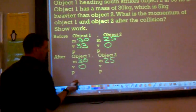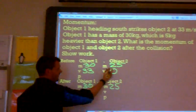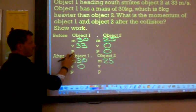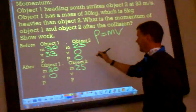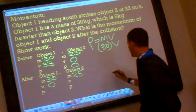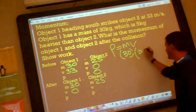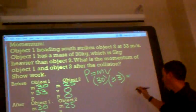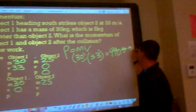Object one, velocity, afterwards, we will assume it's zero. So 25 times zero is zero. And we can calculate the momentum for object one. Momentum, we know, is equal to mass times velocity. The mass is 30. The velocity is 33. So 30 times 33 is 990 kilograms meters per second.